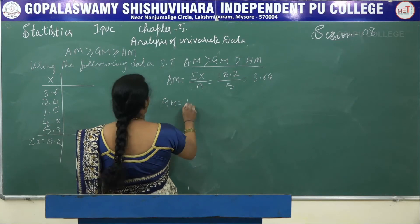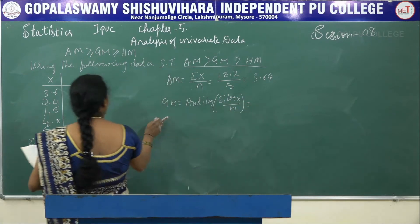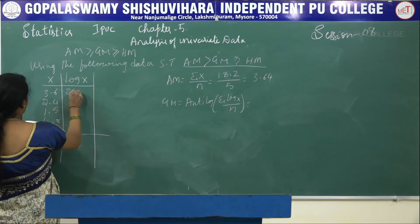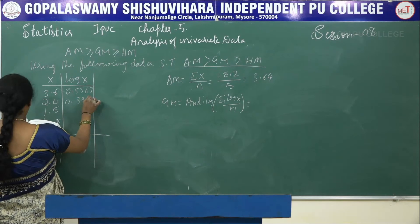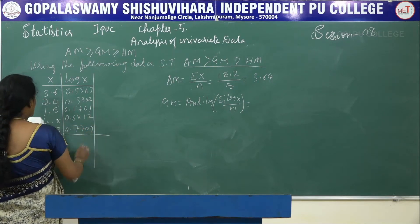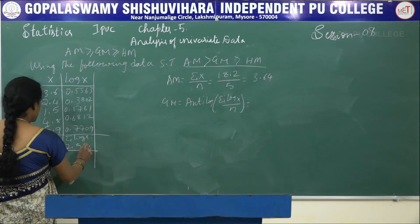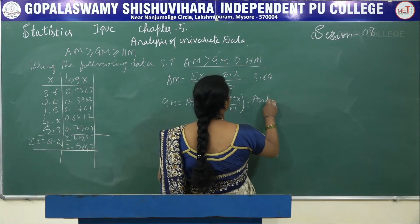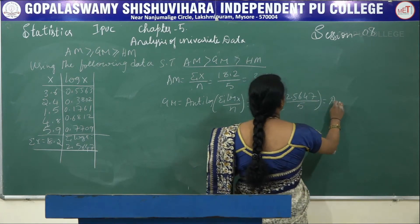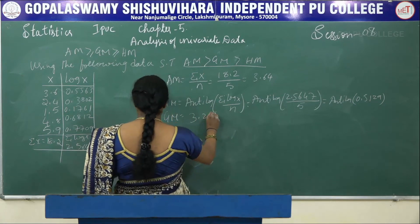Next, to find GM, it is anti-log of summation log X divided by N. The log values for X are 0.5563, 0.3802, 0.1761, 0.6812, and 0.7709. The summation of log X is 2.5647. So GM is anti-log of 2.5647 divided by 5, which is anti-log of 0.5129, giving GM equal to 3.258.